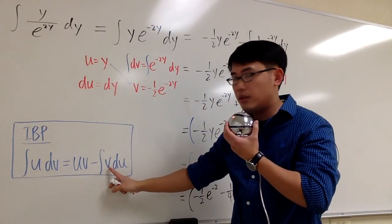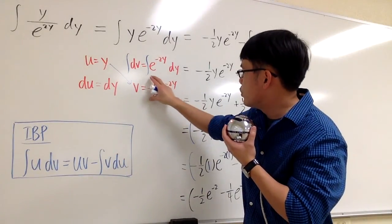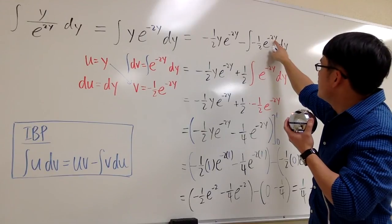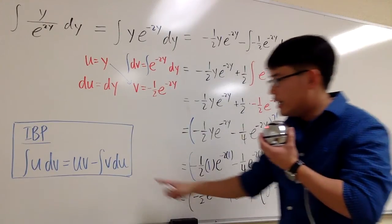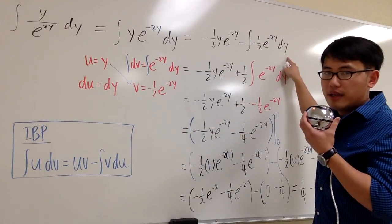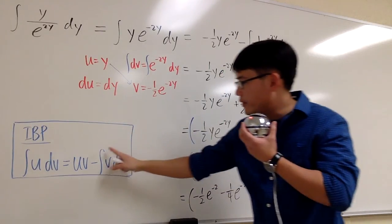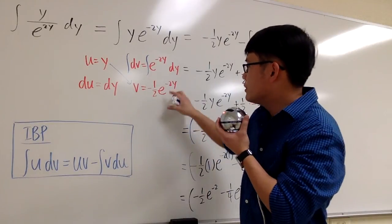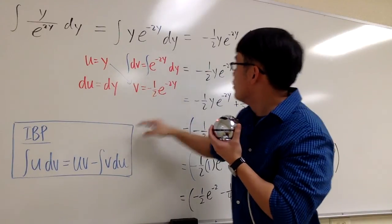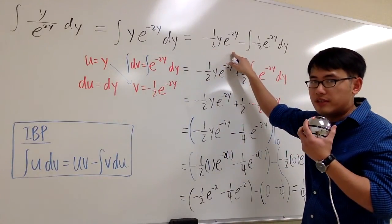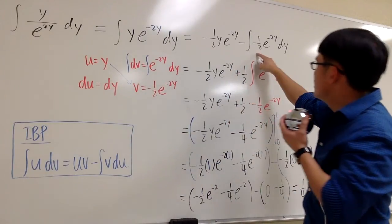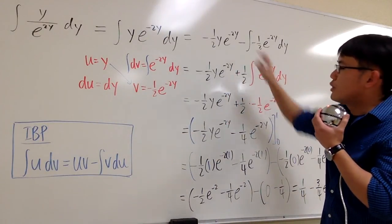The inside is going to be v. v is this. So I will put down this right here, negative 1 half, e to the negative 2y. And then du, it's the same as dy. So we have dy. And notice that, for this integral part, it's actually just the product of this times that. This times that. When you do diagonal, you are going to get a part of the answer. And when you do the product of a row, you are going to get the integral. And then don't forget the subtraction.